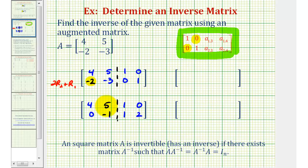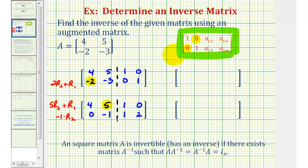Now let's obtain a zero in the first row, second column position. The element below the five is negative one, so we replace row one with five times row two plus row one. We also want the leading element in row two to be positive one, so we replace row two with negative one times row two. For row one: five times zero plus four is four; five times negative one plus five is zero; five times one plus one is six; five times two plus zero is ten. For row two: zero, positive one, negative one, negative two.